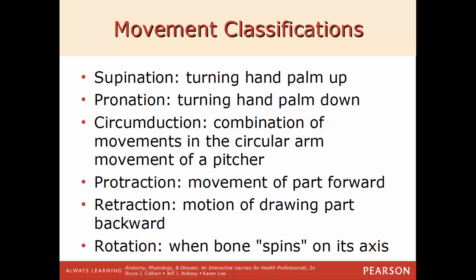Supination and pronation involve the hand and palm. Supination means your palm is up — in the standard anatomical position with palms facing out, that is the supinated position. Pronation means putting your palm down; anytime you are in a prone position, you are face down, so pronation is when palms face downward. Circumduction means moving in a circular path — circum is always referenced to a circle. Protraction means moving a body part forward; retraction means moving a body part backward. Rotation is when a bone spins on its axis.